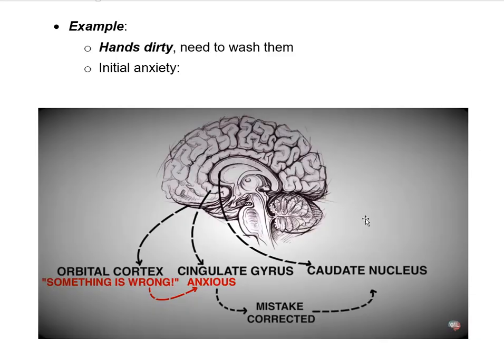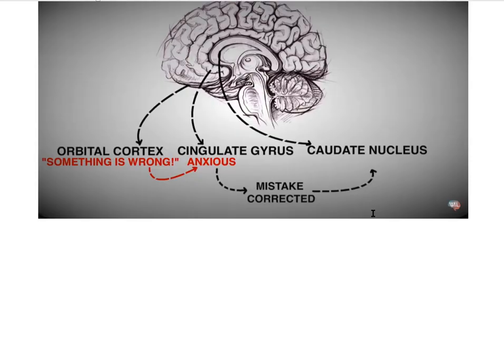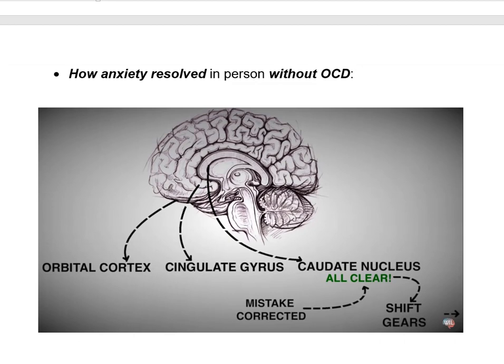You wash your hands, and this is where the caudate nucleus comes in. In a person without OCD, the caudate nucleus monitors what's going on and gives you the all-clear message: you've washed your hands, they're clean, you can move on to your next task — sit down, respond to emails. You don't feel anxious. You feel fine, because you don't have OCD.